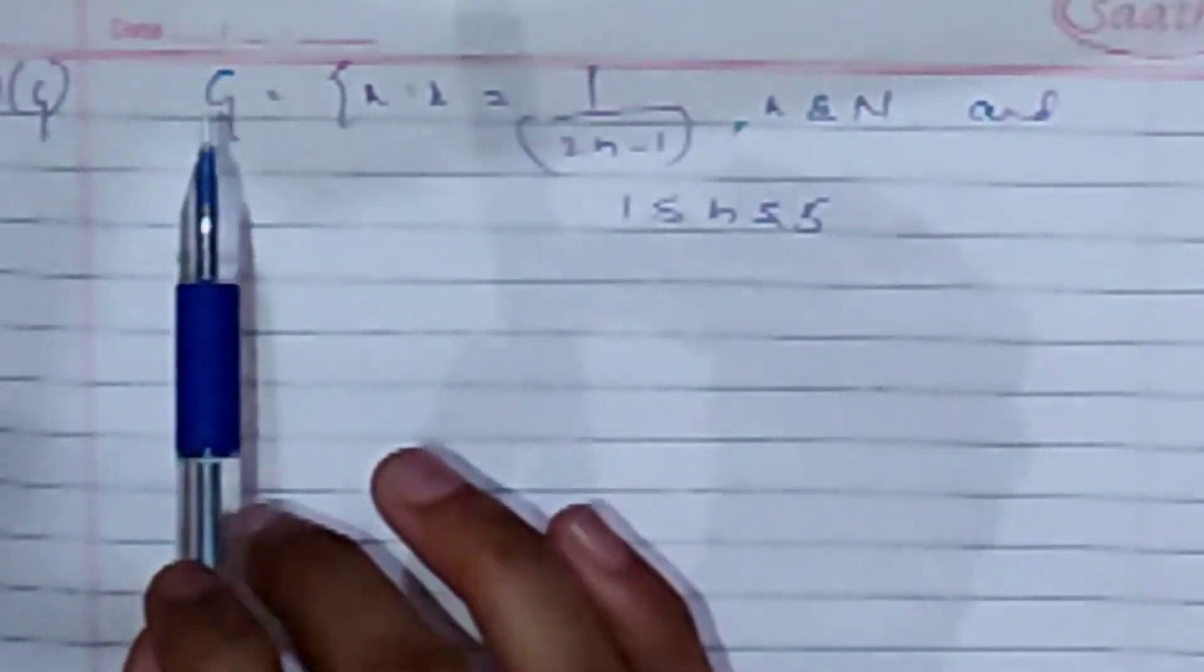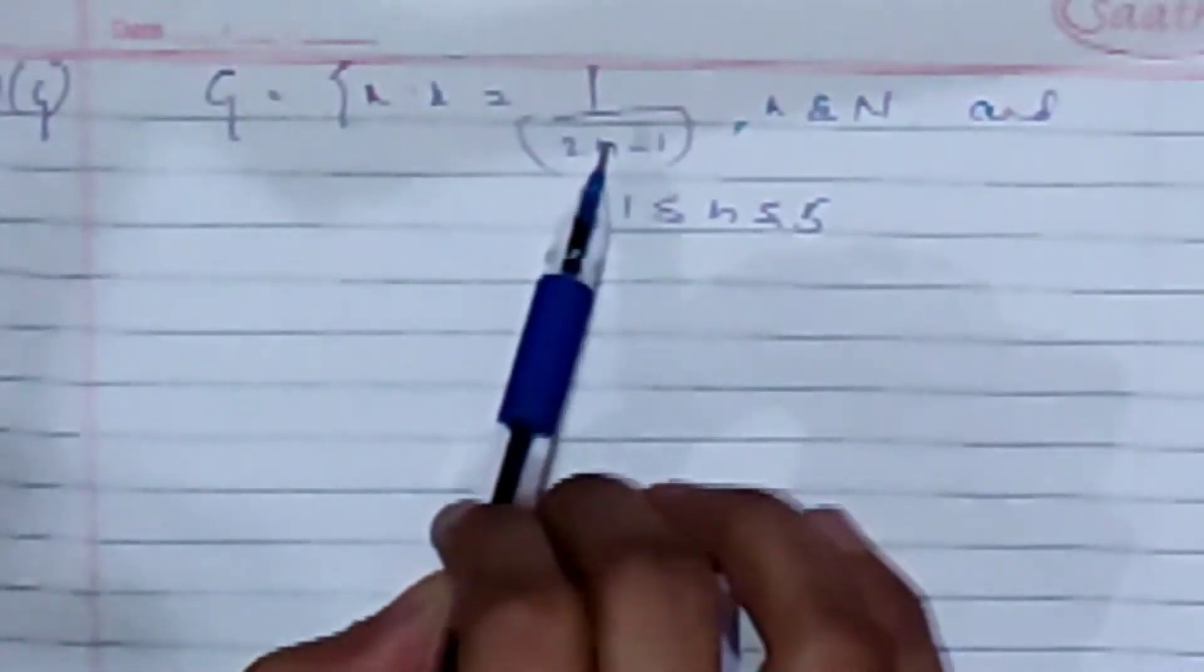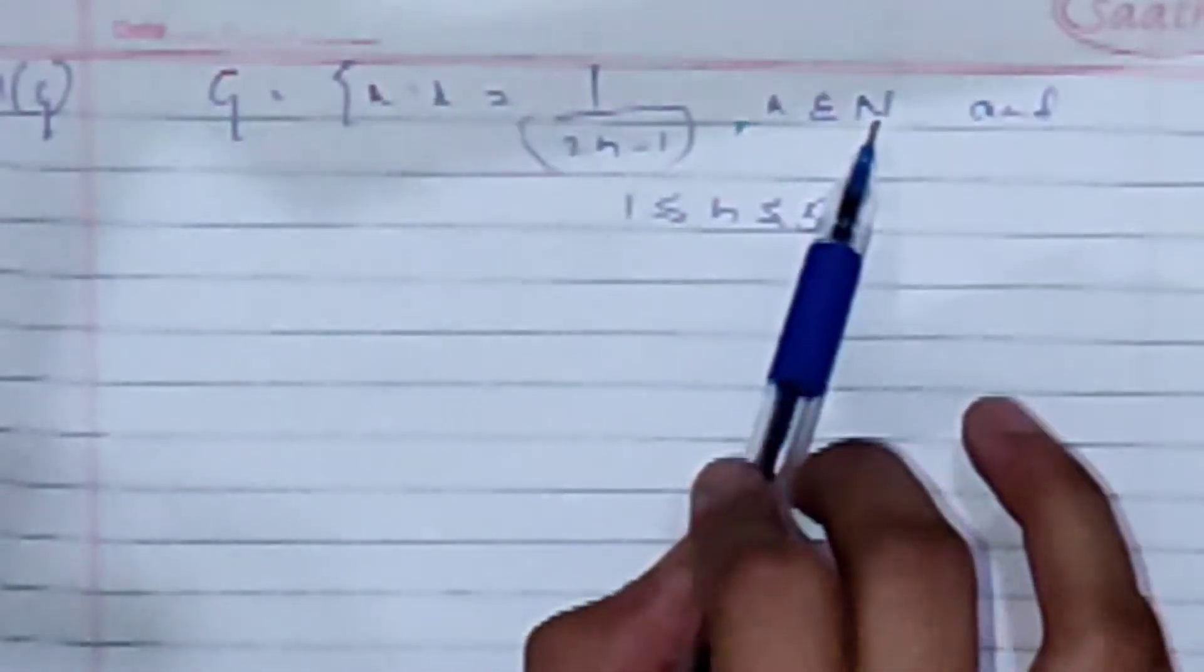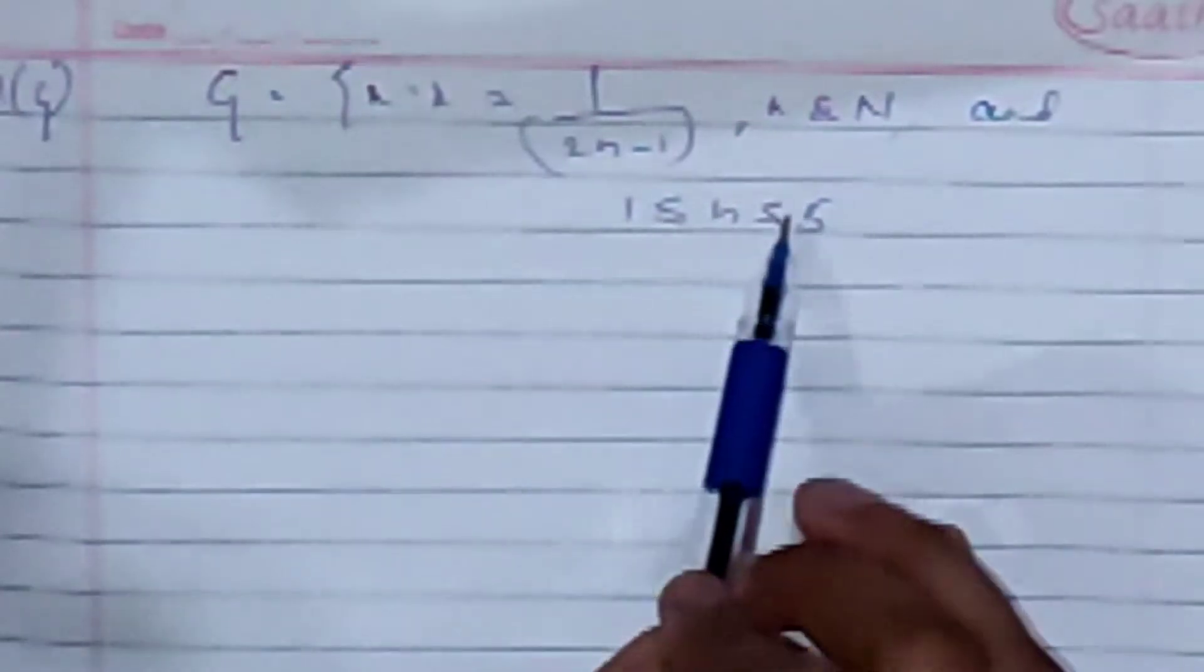So, the G-L part is G is equal to x such that x is equal to 1 by 2n minus 1, n belongs to N, which means natural number, and 1 less than equal to n less than equal to 5.